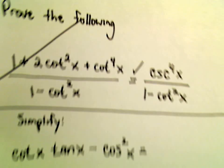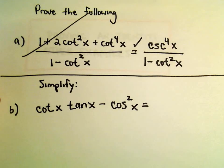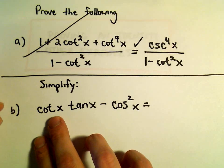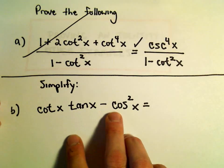Alright, in this video we're going to do an example of actually just trying to find an identity for this expression: cotangent x times tangent x minus cosine squared x.